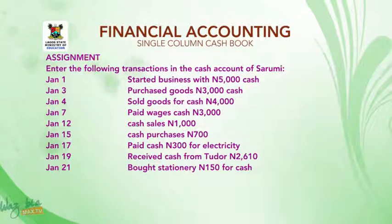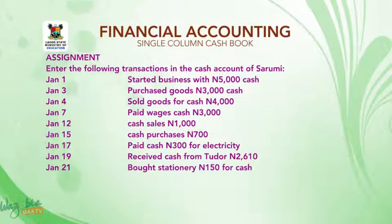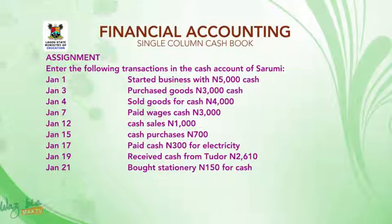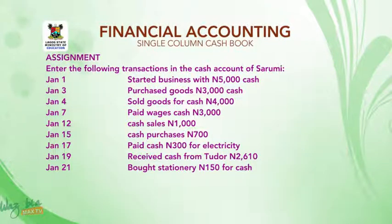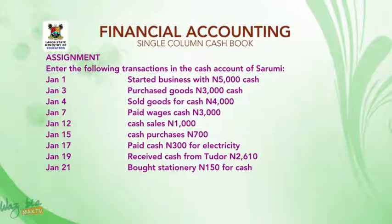Assignment: Enter the following transactions in the cash account of Sarumi. January 1 — start a business with 5,000 naira cash. January 3 — purchase goods, 3,000 naira cash. January 4 — sold goods for cash, 4,000 naira. January 7 — paid wages for cash, 3,000 naira. January 12 — cash sales, 1,000 naira. January 15 — cash purchases, 700 naira. January 17 — paid cash 300 naira for electricity. January 19 — received cash from Tudor, 2,610 naira. January 21 — bought stationery, 150 naira for cash.